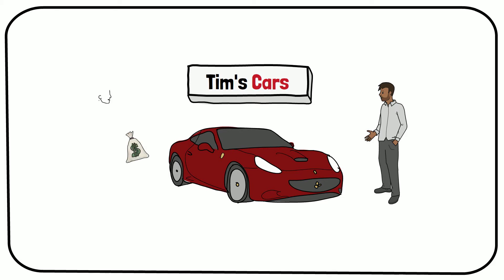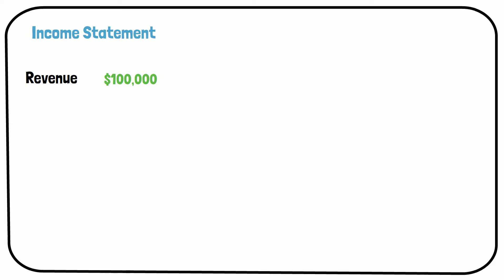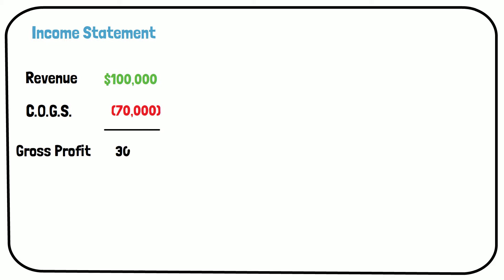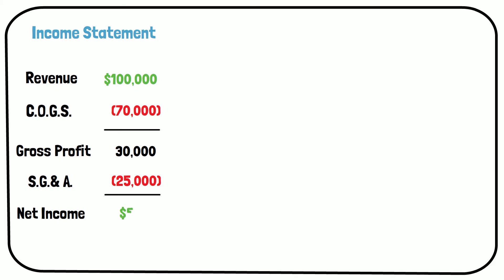A customer buys a car from the company for $100,000. On the income statement, this $100,000 is recorded as revenue. After the revenue, you subtract the cost of goods sold, which for this car is $70,000. So the gross profit is $30,000 on the car that was sold. After subtracting the selling, general, and administrative expenses of $25,000, Tim is left with a net income, or profit, of $5,000. This is the end of the income statement.